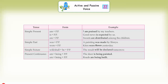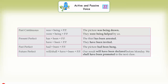Simple future passive: will/shall + be + PP. Example: 'The result will be declared tomorrow.' Present continuous passive: am/is/are + being + PP. Examples: 'The door is being painted,' 'Roads are being built.' Past continuous passive: was/were + being + PP. Examples: 'The picture was being drawn,' 'They were being helped by us.'